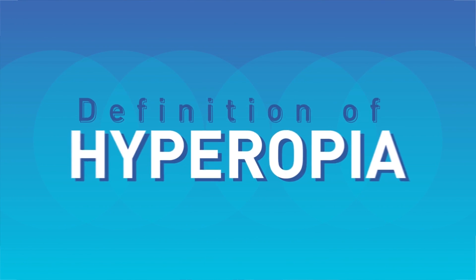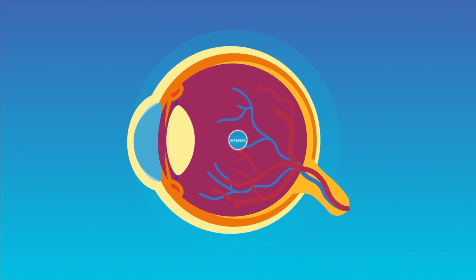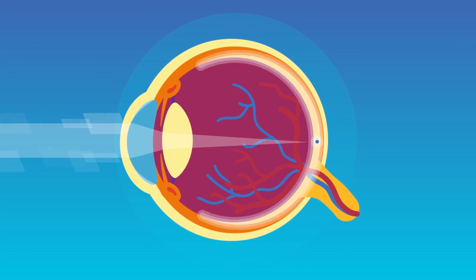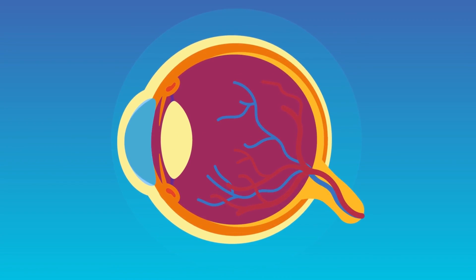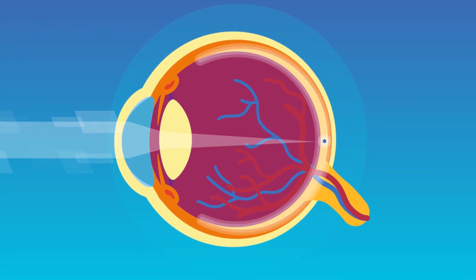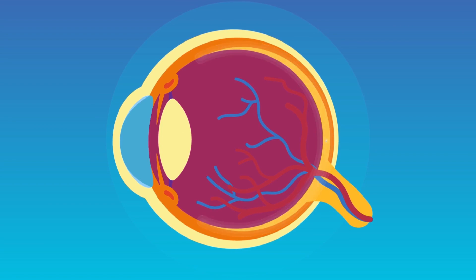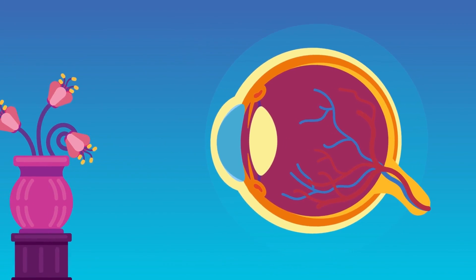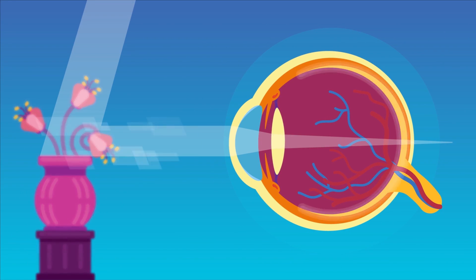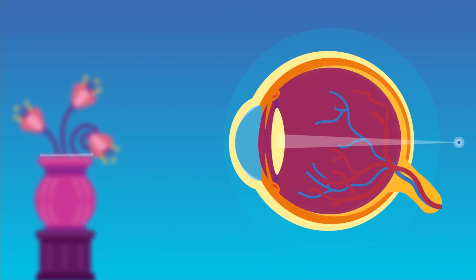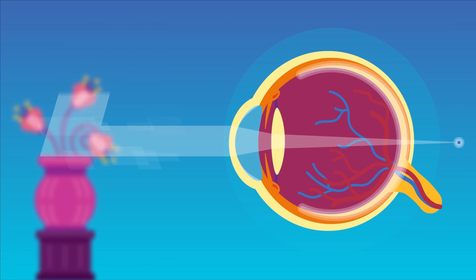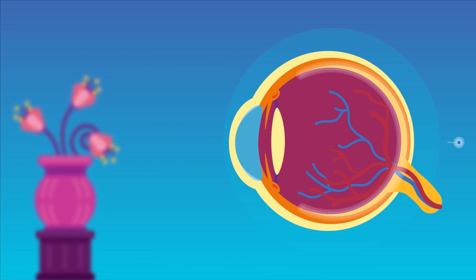Definition of hyperopia: it is a form of refractive error — inability to refract, bend, and focus light rays properly — in which parallel rays of light coming from a distant object, after entering the eye, are focused behind the retina, with accommodation (eye muscles) at rest.